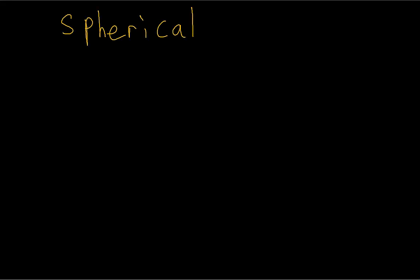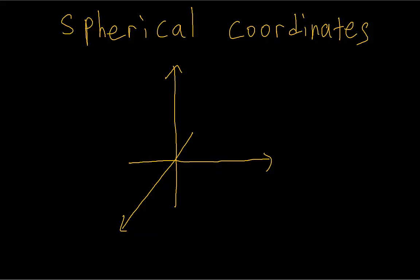Spherical coordinates are yet another alternate coordinate system to describe 3D space. As with cylindrical coordinates, it's mainly useful for certain curved objects.